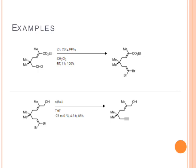So this was all about the Corey-Fuchs reaction. To revise: it is the conversion of aldehydes into terminal higher alkynes having one carbon atom more compared to the starting material. The reagents used are carbon tetrabromide and triphenylphosphine. The reaction proceeds via formation of dibromo olefin, which is converted into lithium acetylide, and lithium acetylide on hydrolysis generates the terminal alkyne. Thank you.